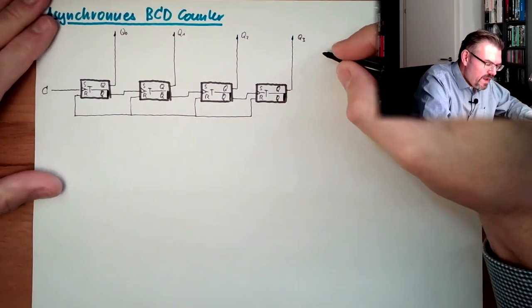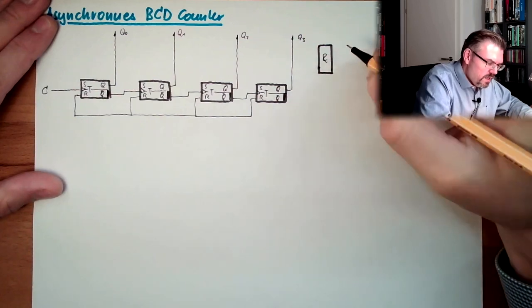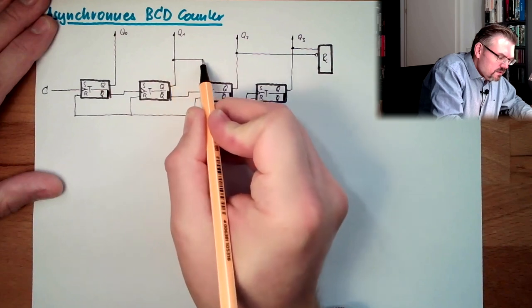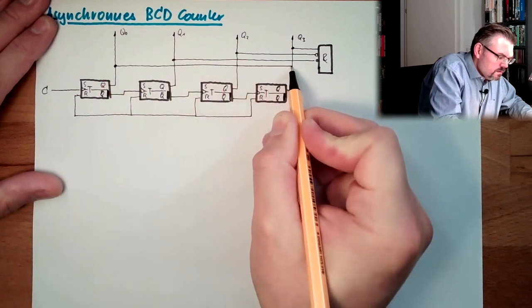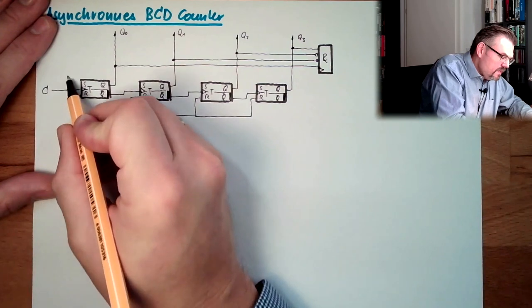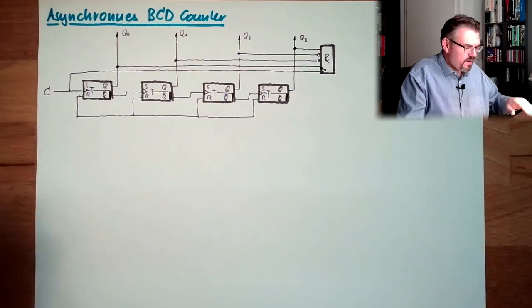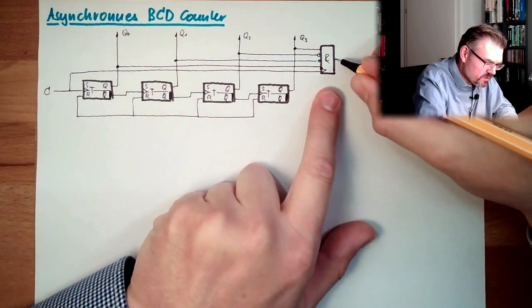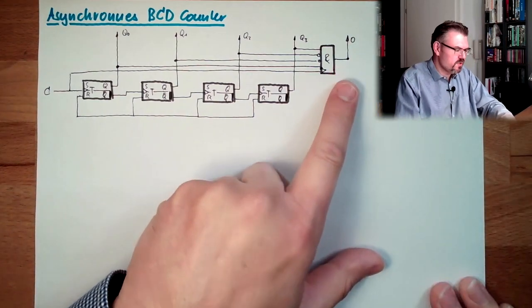So what we do is simply we add here an AND block. Big AND block. So we say this must be one, this must not be one, this must not be one, and this must be one. And then we make an additional dynamic input coming from C. What is happening now? If we have this combination, so if it's nine, and we have a rising edge, here we have a short signal. So this is already our overflow signal to the next digit. This goes to the next digit.